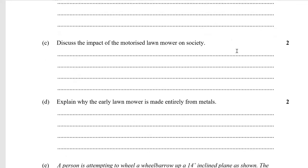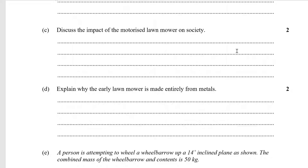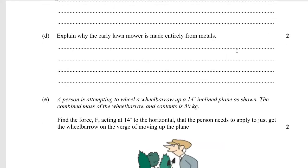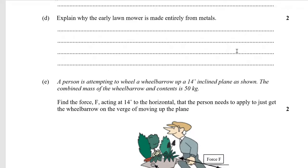Discuss the impact of the motorized lawnmower on society: use of fossil fuels which are non-renewable and not sustainable, they produce carbon dioxide which is bad for the environment, they produce noise. On the other hand, they reduce the amount of time taken to maintain a lawn, which gives people more leisure time — generally considered a positive — and manufacturing them produces employment. Early lawnmowers were made entirely from metals because prior to World War II, the use of polymers was less well developed.